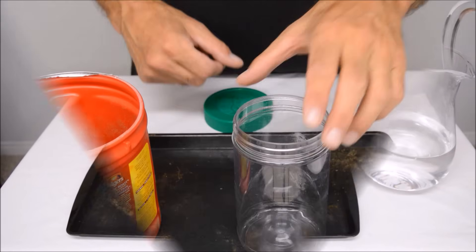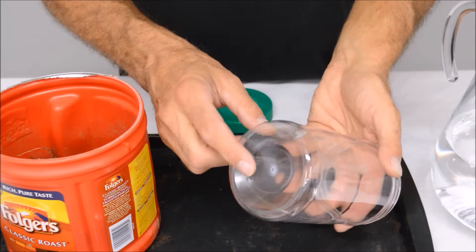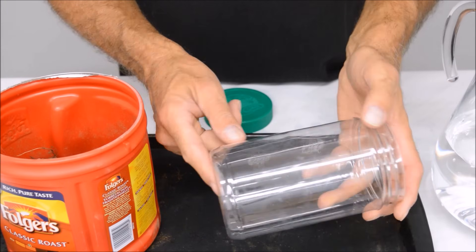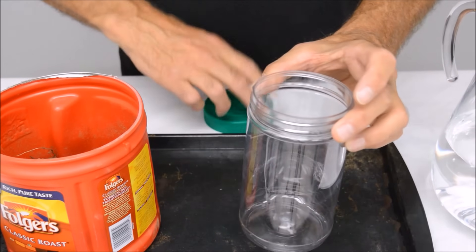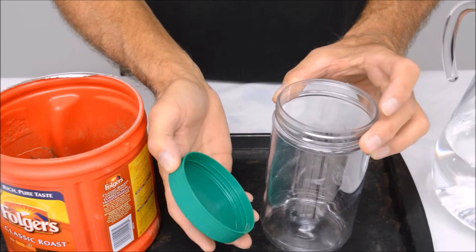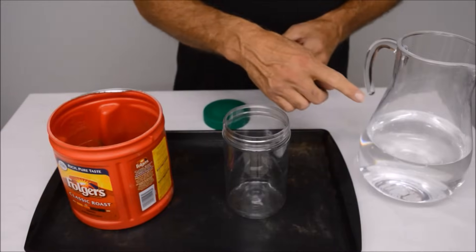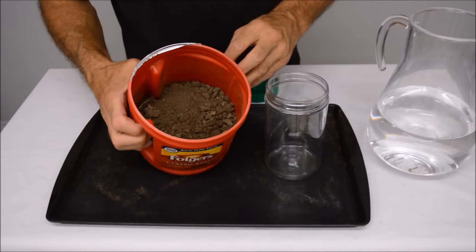You will also need a clear container and an old jar works well. Try to get one with vertical sides and a flat bottom. I'm going to use an old peanut butter jar. You will also need some tap water. Let's get started.